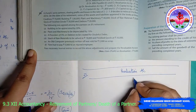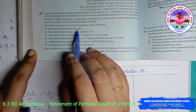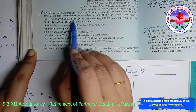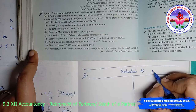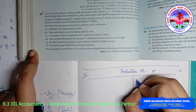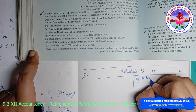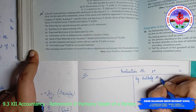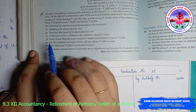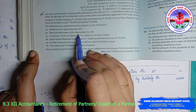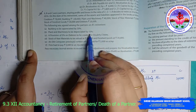Opening the revaluation account: building is appreciated by 20% — building is 1 lakh, so 20% is 20,000. Asset is increased, so credit it: by building account 20,000. Then plant and machinery to be depreciated by 10%.